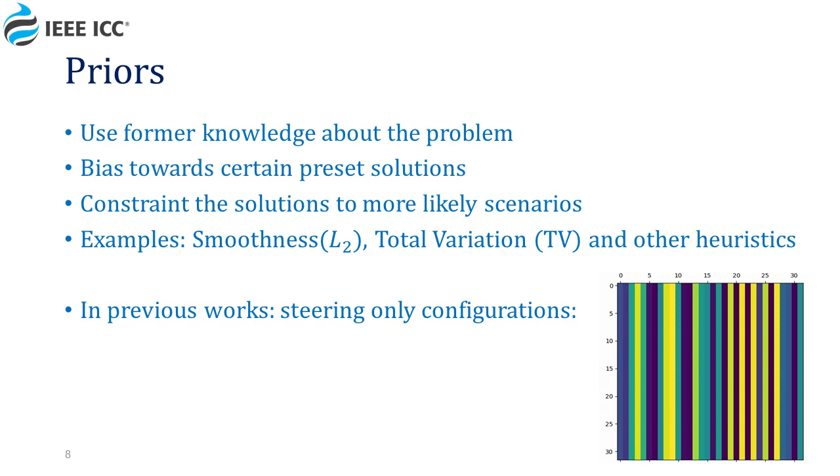For example, using prior knowledge about natural image smoothness can help improving deep convolutional network performances, and using low total variation in order to improve the complexity of finding time domain filters proves itself to be very useful. There are many examples for that.